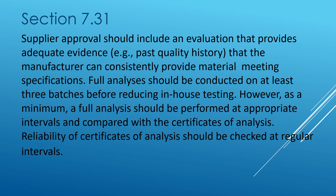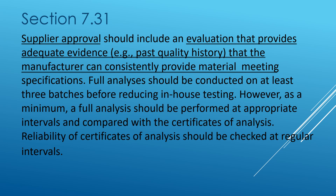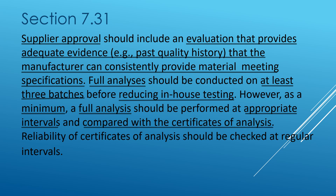Let us see what section 7.31 says. Supplier approval should include an evaluation that provides adequate evidence — for example, past quality history — that the manufacturer can consistently provide material meeting specifications. Full analysis should be conducted on at least three batches before reducing in-house testing. However, as a minimum, full analysis should be performed at appropriate intervals and compared with the certificates of analysis.